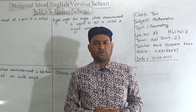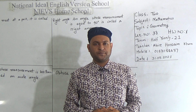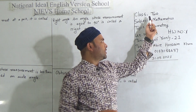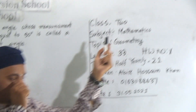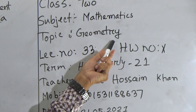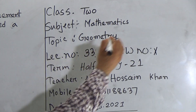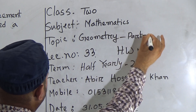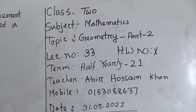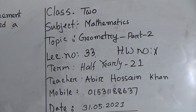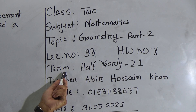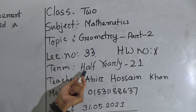At day shift of National Ideal English Version School. Today I'm going to take a mathematics class for class two, and our today's topic is Geometry Part Two. Today we will learn about angles, and today's lecture is 33, which is included in your half-early examination.